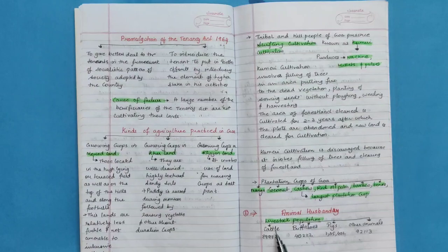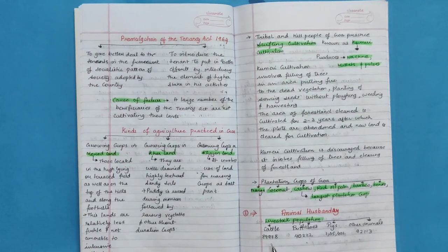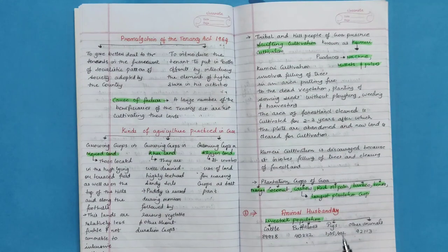Animal husbandry. Livestock: cattle is 89,978, buffaloes 40,022, pigs 15,402, other animals 92,130. Now, these ratios are of the previous time, not like the current updated ones.